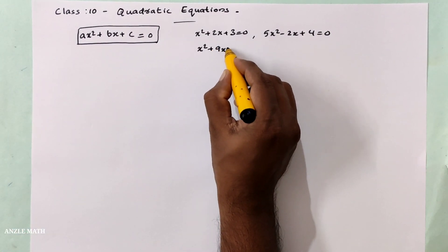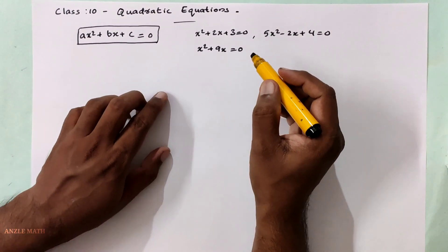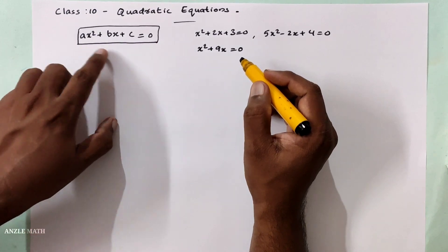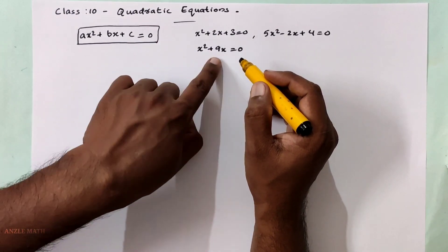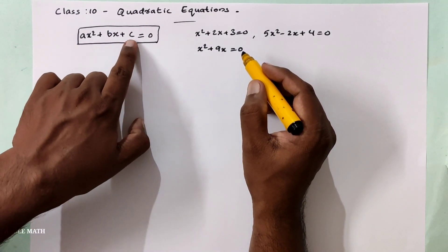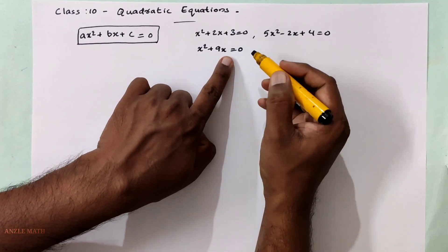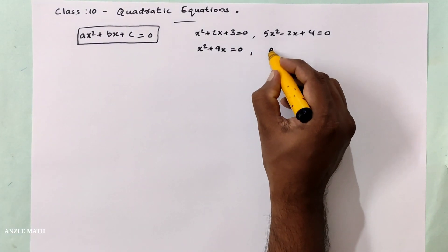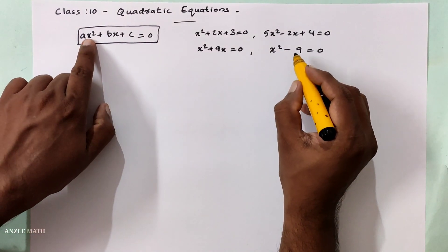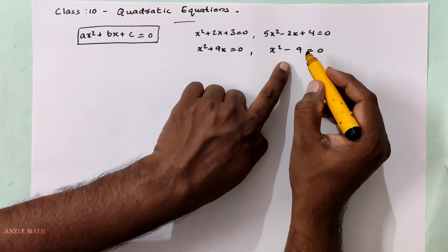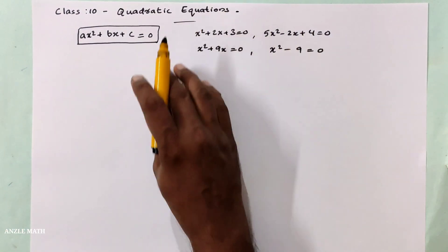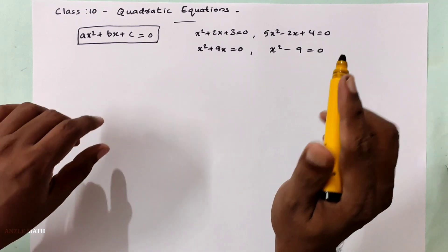Where there are two examples: x² plus 9x equals 0. Here b equals 9, but there is no constant term, so c equals 0. Let's see another example: x² minus 9 equals 0. Here x² equals a constant. This too is a quadratic equation.